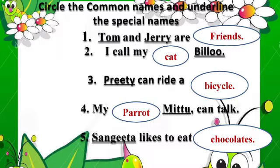Circle the common names and underline the special names. Here you have to circle the common names and underline the special names. Second question — I call my cat Billu. Here, cat is a common name and Billu is a special name. Third question — Preeti can ride a bicycle. Here, Preeti is a special name and bicycle is a common name.